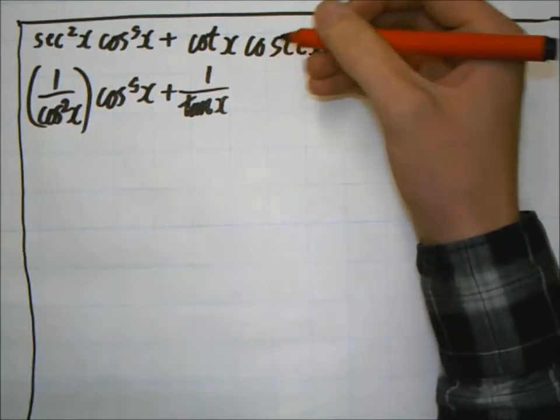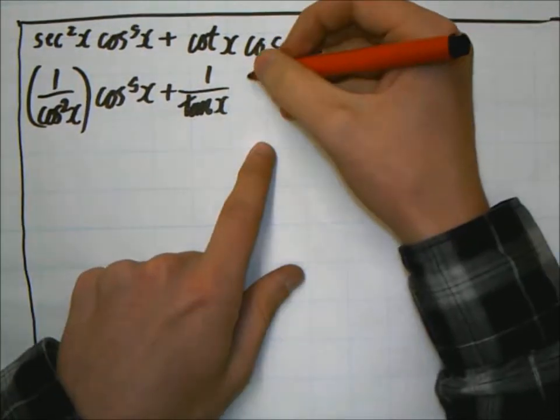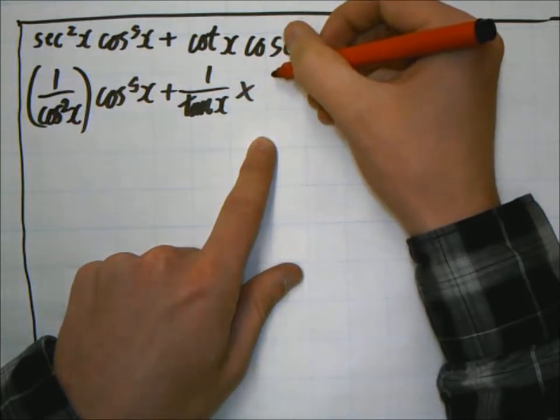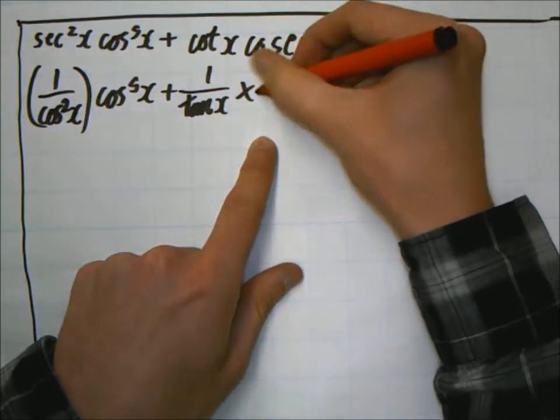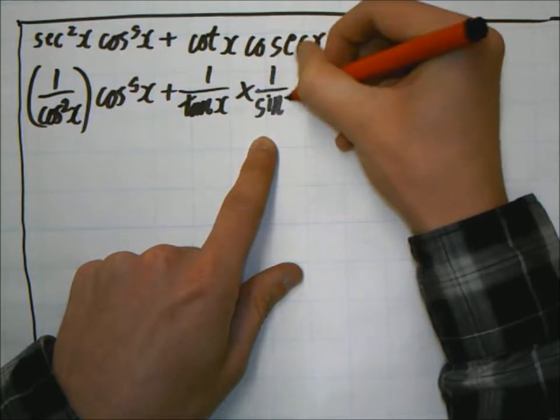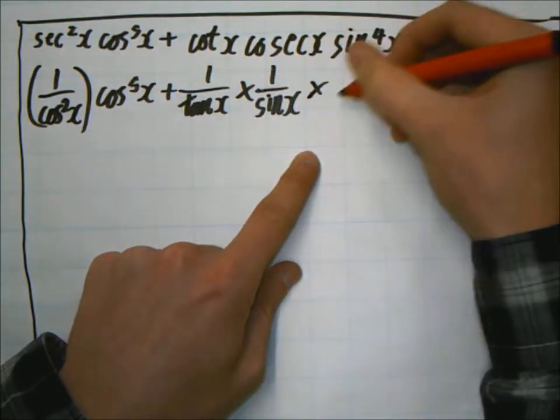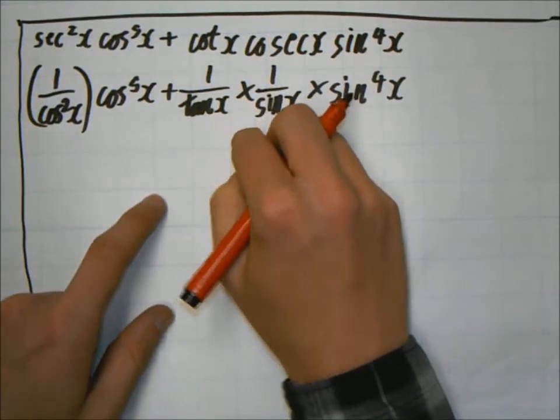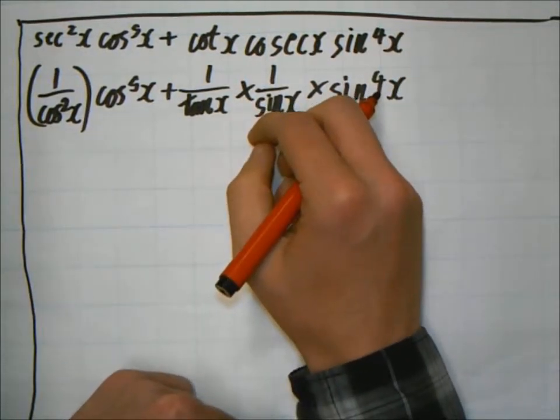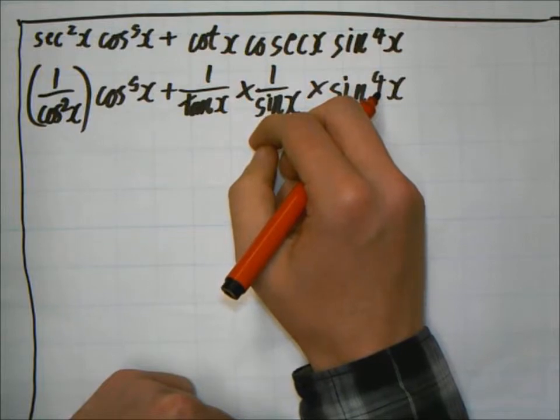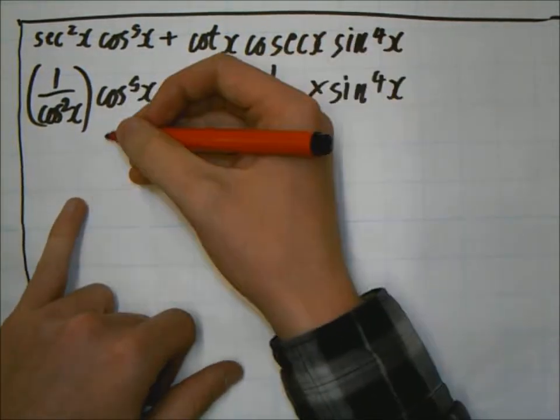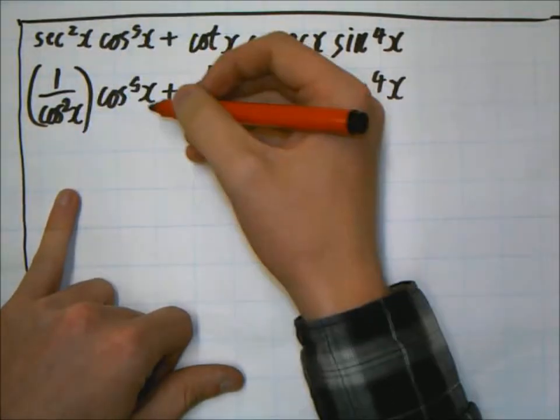Times cos to the 5x plus one over tan x. And if you're saying I've got the wrong one thing, one over sin x times sin 4x. And then we know that one over tan is the same as cos x over sin x.